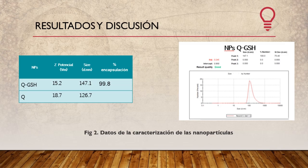En cuanto a los resultados de la caracterización de las nanopartículas, las de quitosán con glutatión tuvieron un potencial Z de 15.2 mV, un tamaño de partícula de 147.1 nm y un porcentaje de encapsulación de 99.8%, lo que significa que prácticamente se encapsuló todo el glutatión añadido. Las nanopartículas de quitosán tuvieron un potencial Z de 18.7 mV y un tamaño de partícula de 126.7 nm. El tamaño se determinó mediante espectroscopía de correlación de fotones con un equipo Z-Sizer de Malvern, y el potencial Z mediante electroforesis.